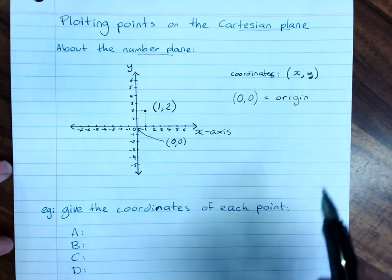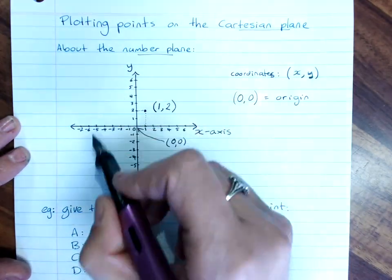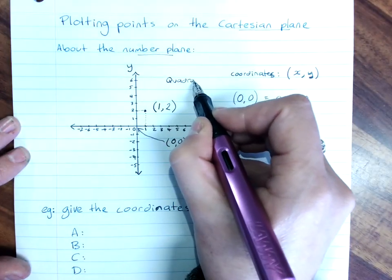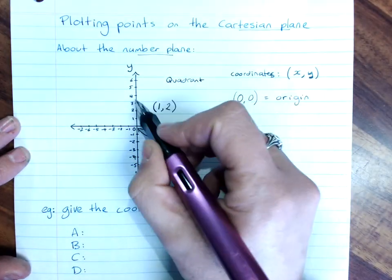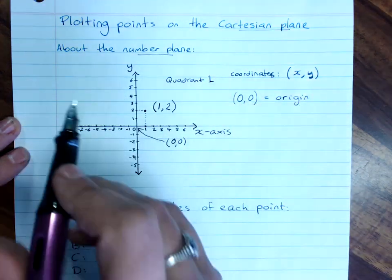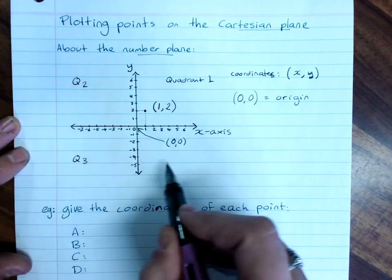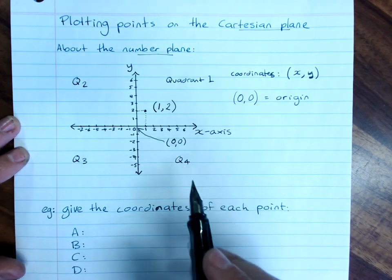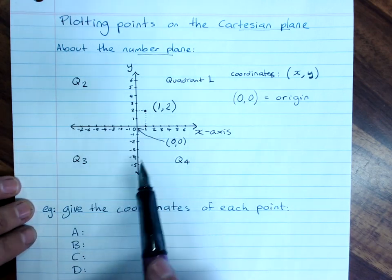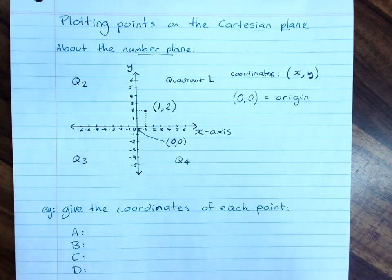It's worth knowing that the four parts of the number plane are called the quadrants. The one where everything's positive is quadrant one, and then we go around in anti-clockwise. This is quadrant two, quadrant three, this is quadrant four. So that's the parts of the number plane, the axes, the different quadrants, and a reminder of what coordinates are.